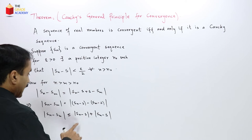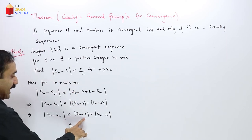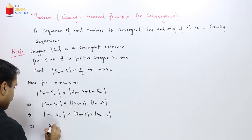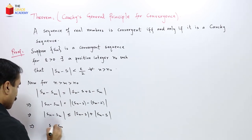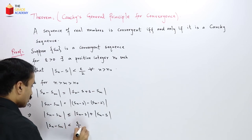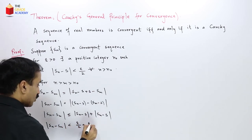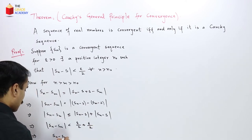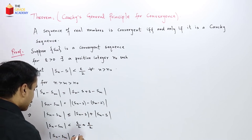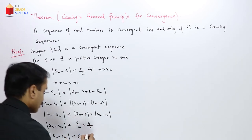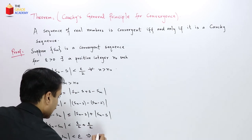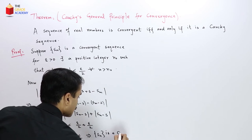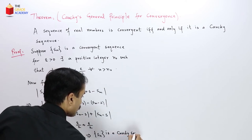Plugging in the values: |Sn - S| < ε/2 and |Sm - S| < ε/2. So |Sn - Sm| < ε/2 + ε/2, which implies |Sn - Sm| < ε. This implies Sn is a Cauchy sequence.